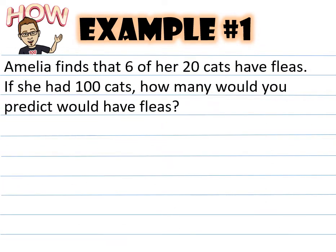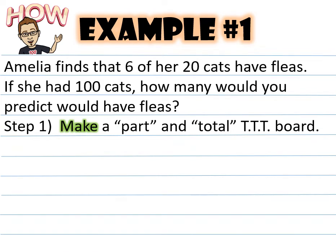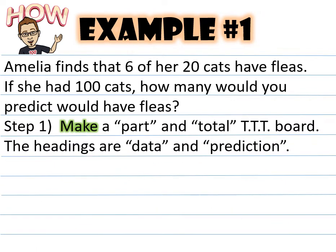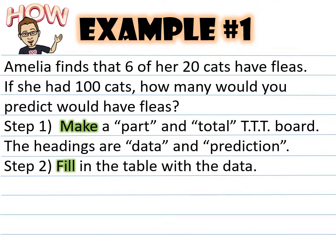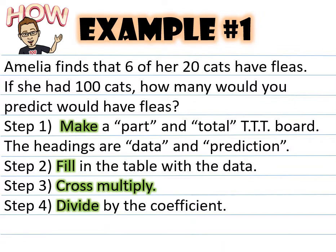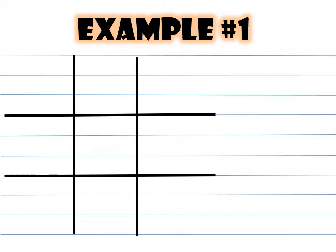Example number one: Amelia finds that six of her 20 cats have fleas. If she had 100 cats, how many would you predict would have fleas? Step one: make a part and total tic-tac-toe board — the headings are 'data' and 'prediction.' Step two: fill in the table with the data. Step three: cross multiply. Step four: divide by the coefficient.